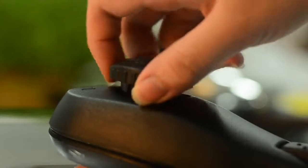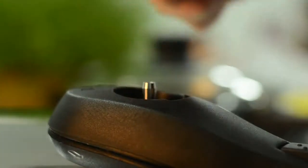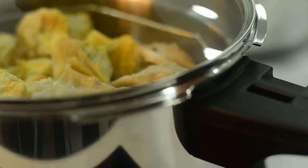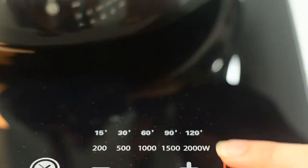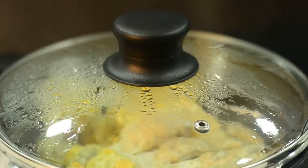If you are using the pressure cooker lid, remove this pressure control valve. For this recipe, we are using the glass lid. Switch on the stove and let it steam for 8 to 10 minutes.